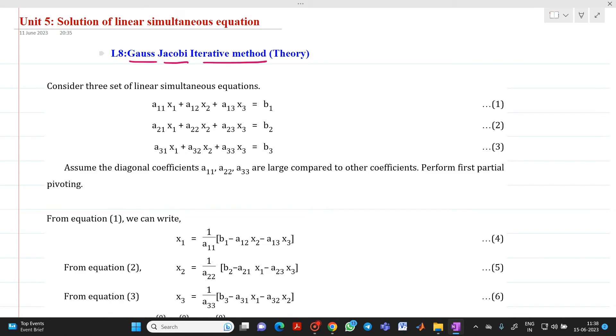This is the first iterative method used to solve linear simultaneous equations. Let us consider three sets of linear simultaneous equations: a11x1 plus a12x2 plus a13x3 equal to b1, a21x1 plus a22x2 plus a23x3 equal to b2, and a31x1 plus a32x2 plus a33x3 equal to b3.